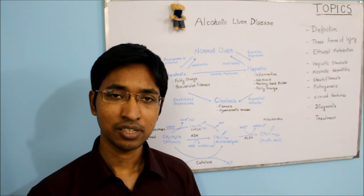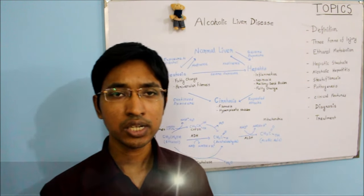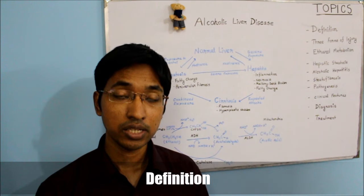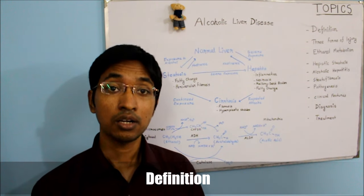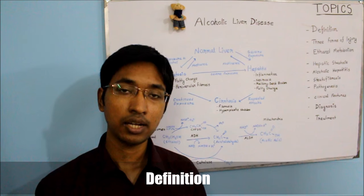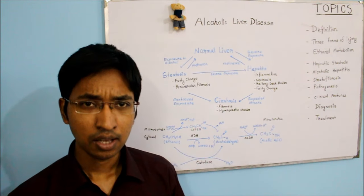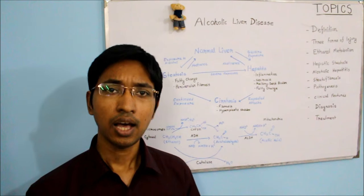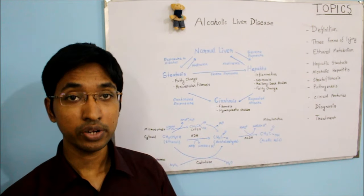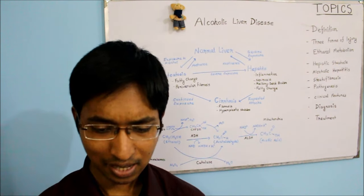First question: what is alcoholic liver disease? Alcoholic liver disease can be defined as a term that is used to describe a spectrum of liver injury associated with acute and chronic alcoholism.